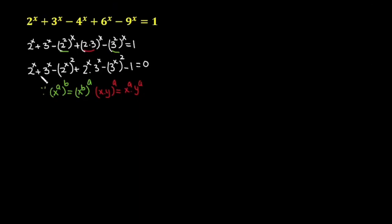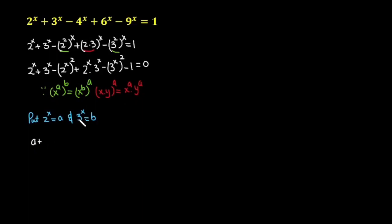In the next step, I am going to put 2 raised to the power x equal to a, and 3 raised to the power x equal to b, because there are repeated occurrences of 2 raised to the power x and 3 raised to the power x in this equation. So replacing 2 raised to the power x with a and 3 raised to the power x with b, our equation becomes: a plus b minus a squared plus a·b minus b squared minus 1 is equal to 0.